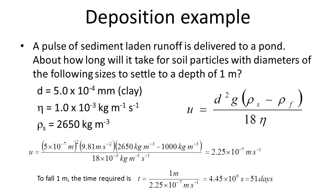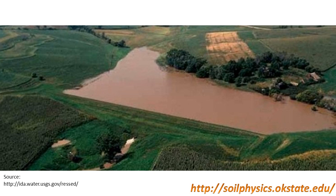Hopefully these calculations have given you some physical understanding of the implications of Stokes law. When you think it through and work back through these calculations, you can understand why soils with high clay contents — when eroded and transported — so often produce those reddish or orangish colored ponds which are so common here in Oklahoma where I live.